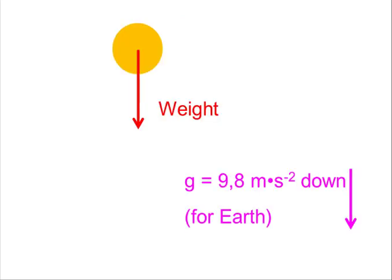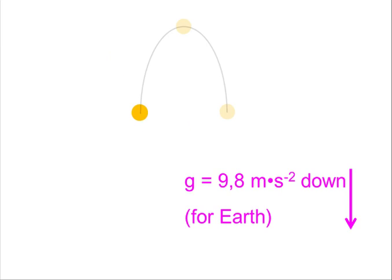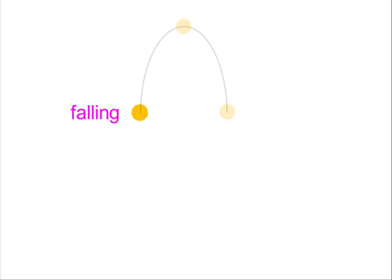Whether the object — the projectile — is moving upward, or stationary at the top of its motion, or moving downward, as long as weight is its only significant vertical force, it is falling. As long as it is accelerating at g, 9.8 meters per second squared, it is falling. So while it moves up, while it's at the top of its motion, while it moves down — all that time, while it's accelerating at g, it's falling.